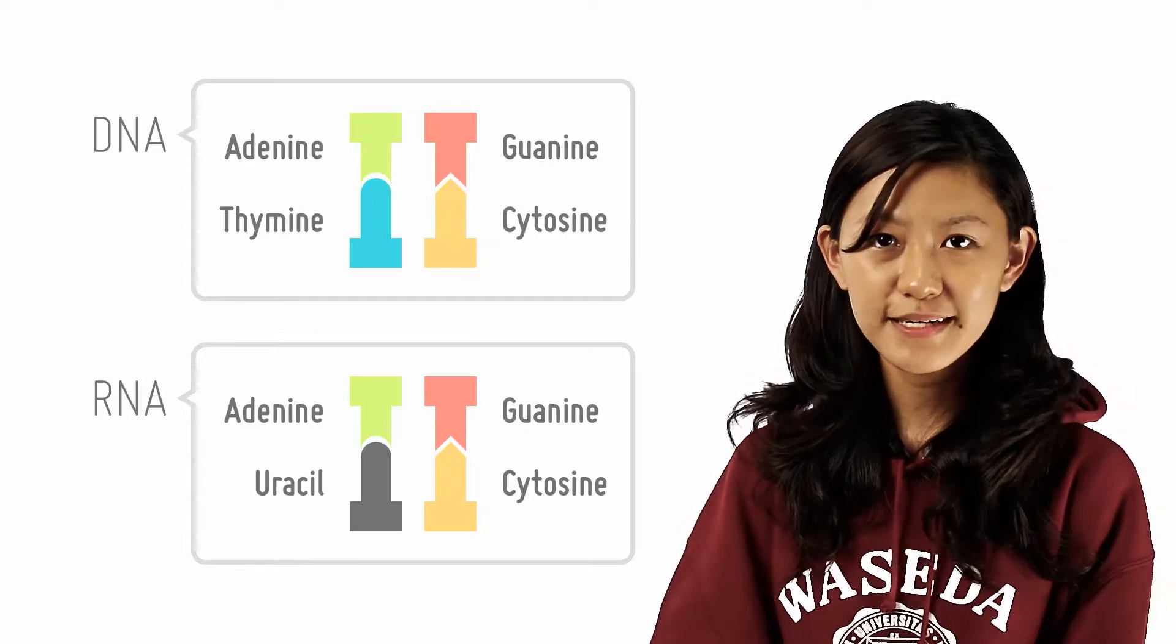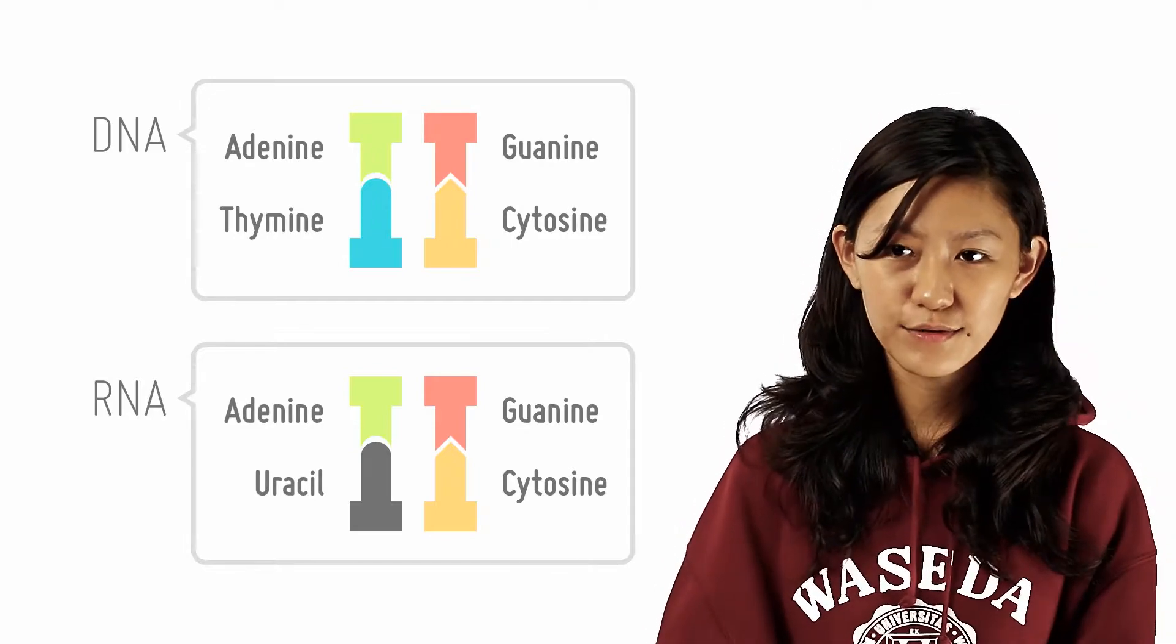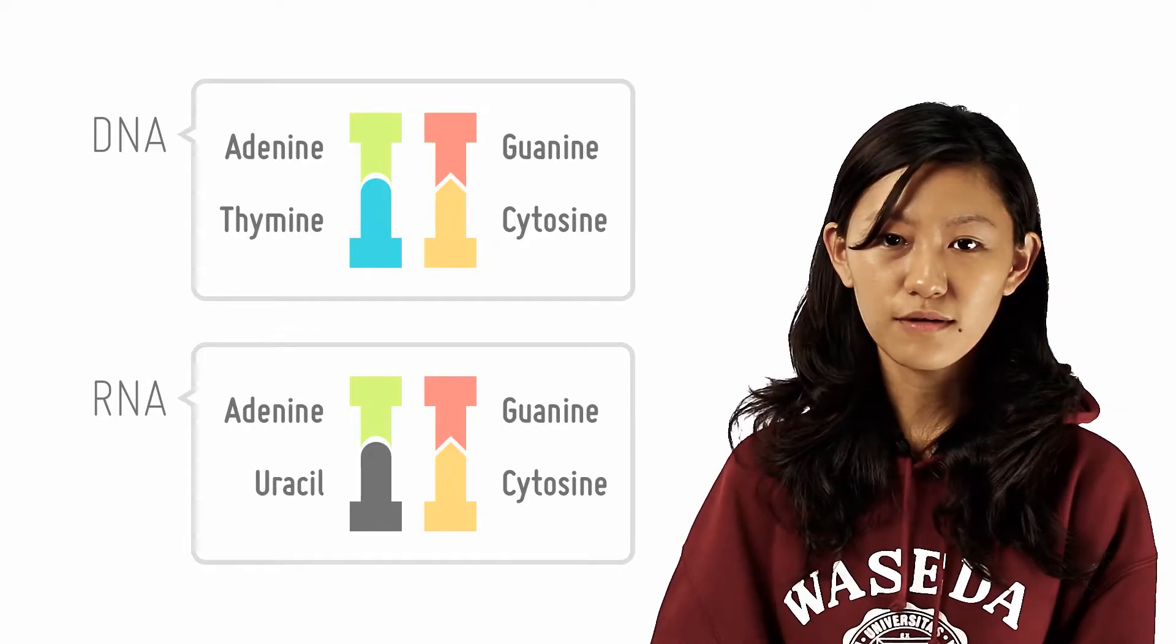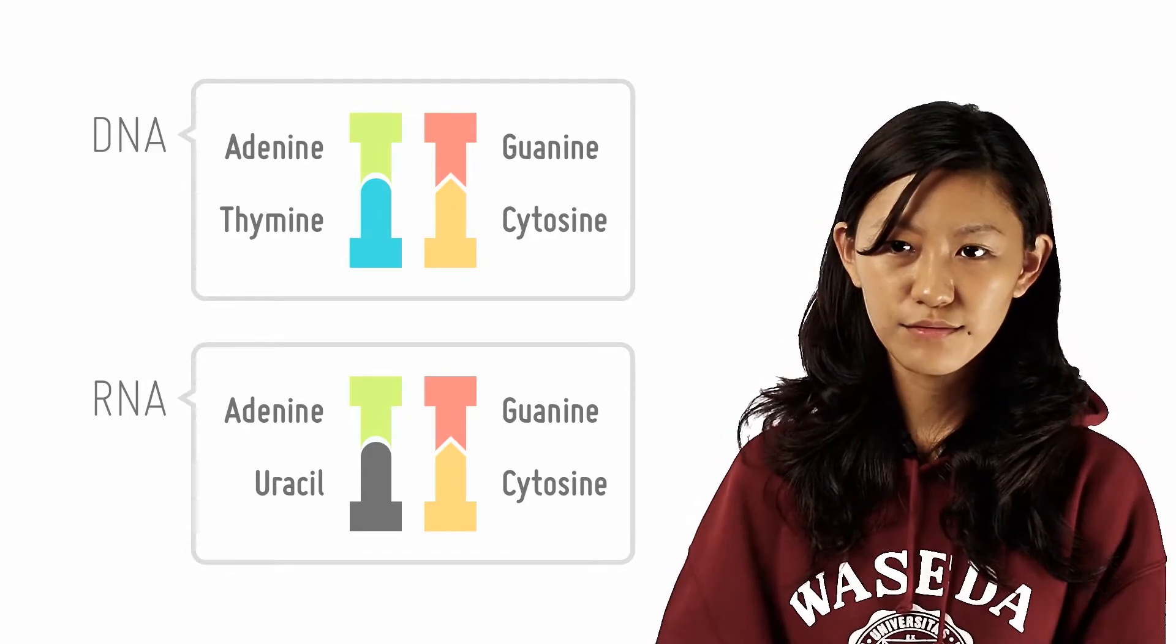Thus, in complementary base pairing, A on the DNA strand will be paired with U, while T on the DNA templated strand will be paired with A.